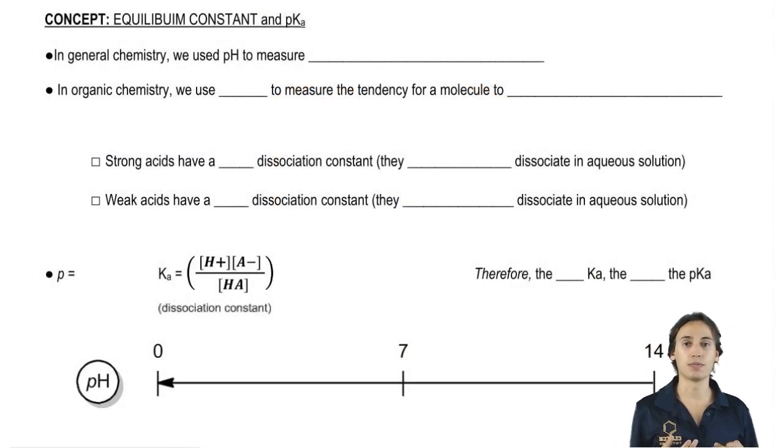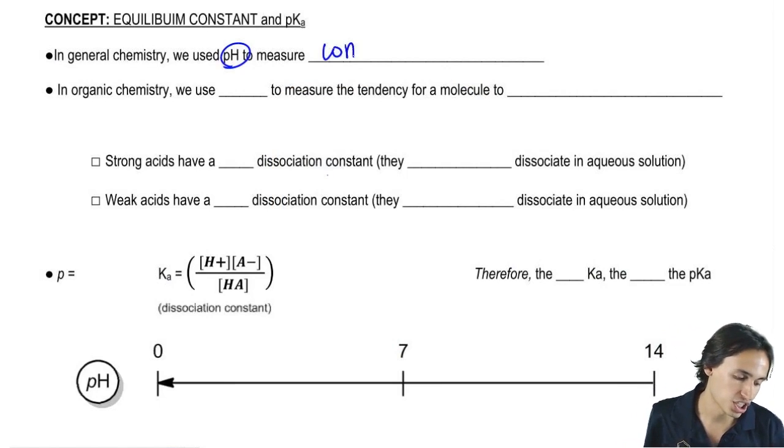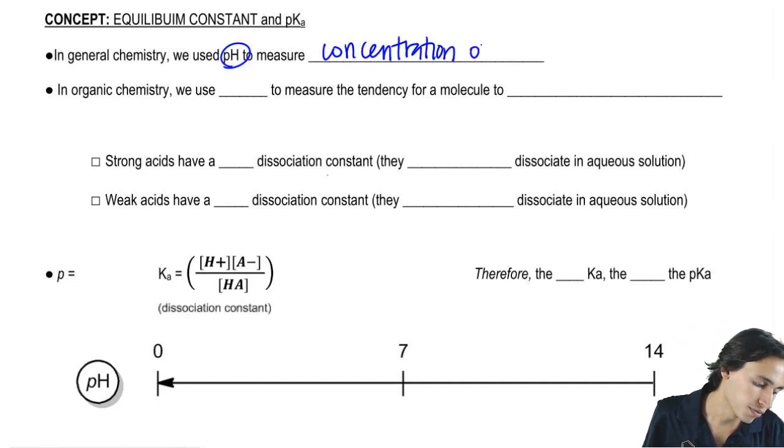So remember that in general chemistry, we are always talking about something called pH. And pH was used to measure what, do you guys remember? It was actually used to measure the concentration of hydronium ions in a solution.